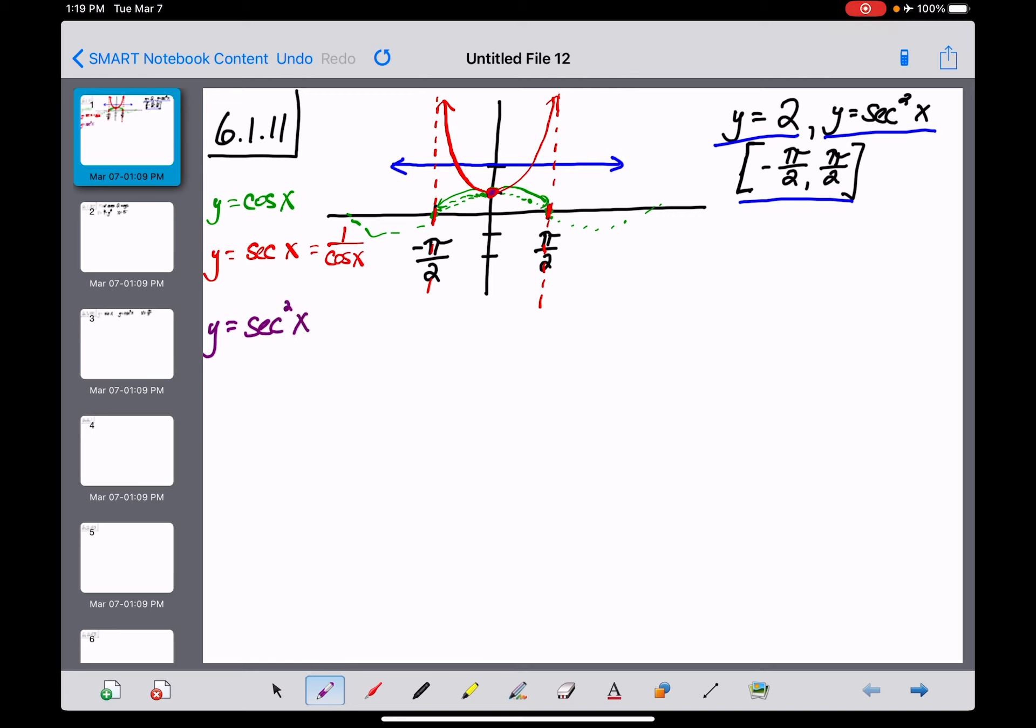The graph of secant squared of x really isn't going to look very different. We started at the point (0,1), and when you square that y-coordinate of 1, you still get 1. The vertical asymptotes are still intact.